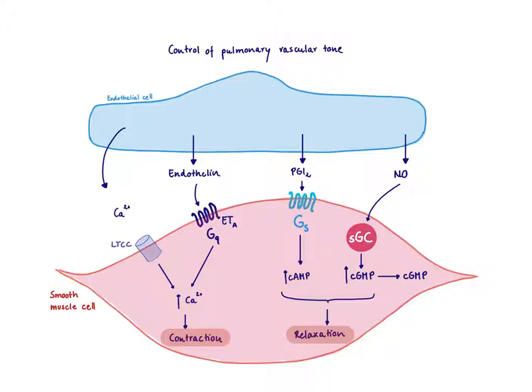We have several dilatory mediators that work via an increase in cyclic AMP or cyclic GMP. There's prostacycline, which works via a Gs-coupled receptor, and nitric oxide, which activates soluble guanylate cyclase.